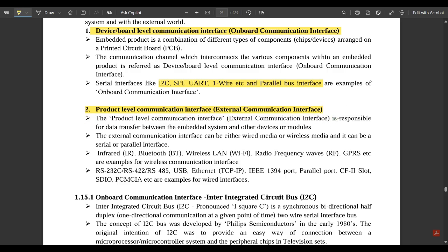This external communication interface is responsible for data transfer between the embedded system and other devices or modules. We use some external communication interfaces. These interfaces can either be wired media or wireless media. It can be a serial or parallel interface. Infrared, Bluetooth, Wireless LAN or Wi-Fi, Radio Frequency waves, and GPRS are some examples for wireless communication interfaces.